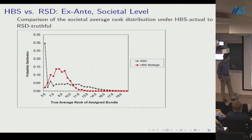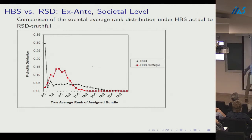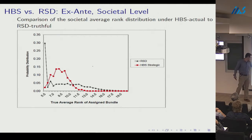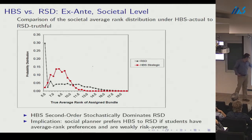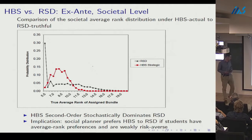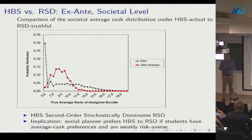Under the dictatorship, 30% of students get their bliss point but there's a fat tail of students with poor outcomes. Under the draft, fewer students get their bliss point — about 2% — but most of the mass is at reasonable-quality bundles with mode around average rank 8. The draft distribution second-order stochastically dominates the dictatorship distribution, meaning a social planner prefers the draft if students have average-rank preferences and are weakly risk averse.